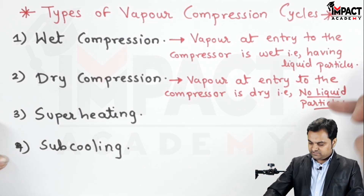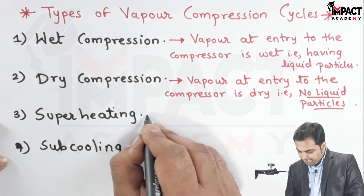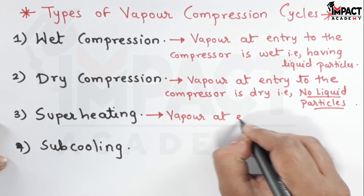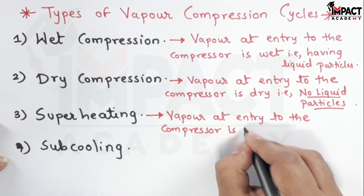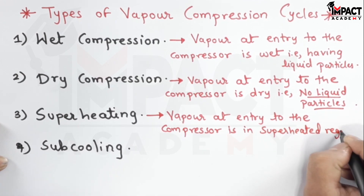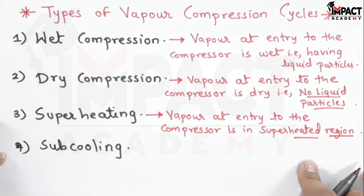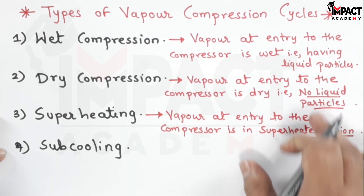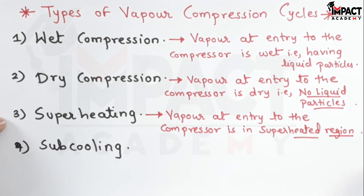In dry compression, the refrigerant vapor does not have any liquid particles, unlike wet compression. In superheated compression, the vapor at the entry to the compressor is in the superheated region — it is ahead of dry compression. The vapor enters the compressor at an even higher temperature and more dry condition than in dry compression.